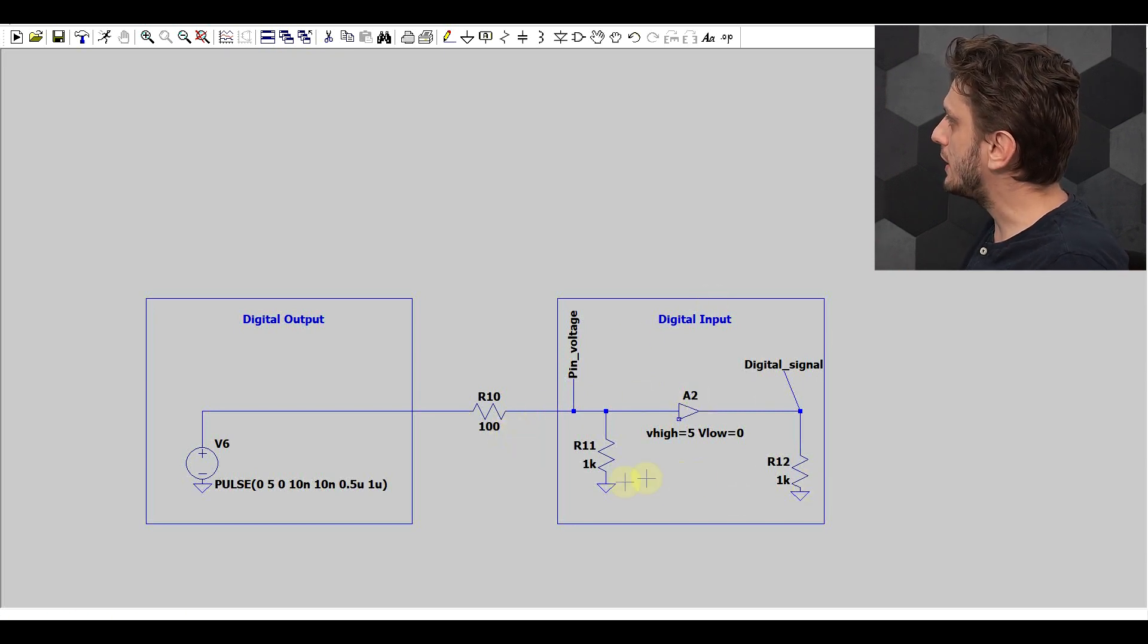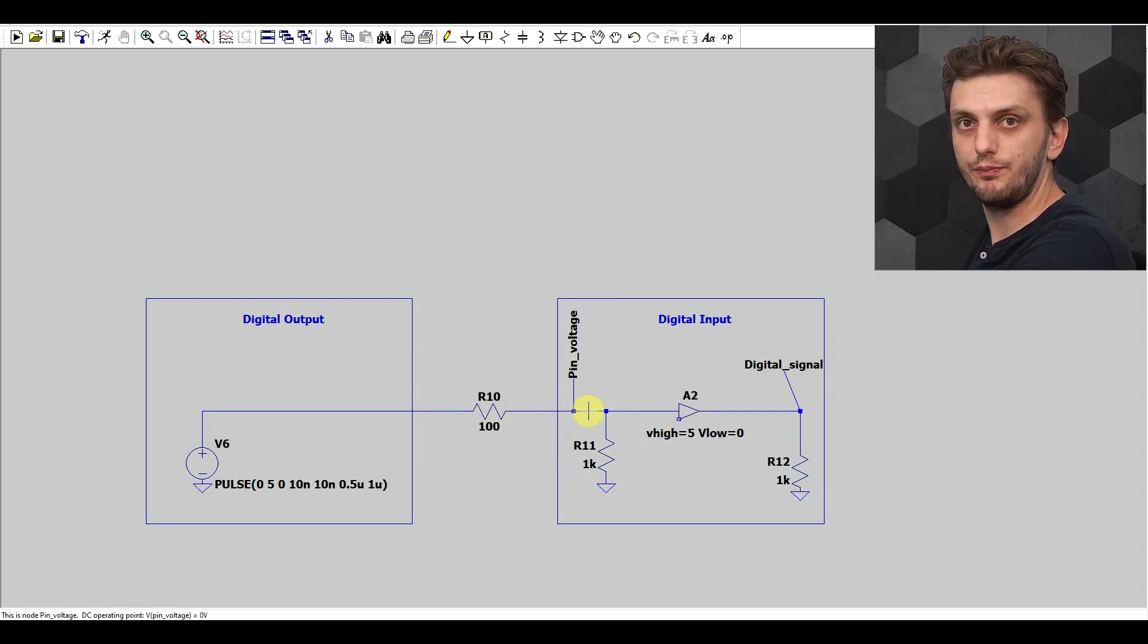And then on the digital input side you have a certain voltage coming into the pin, so this will be the pin voltage that is on the pin of the digital input, and then this is interpreted, and then you have this turned into a digital signal. So this will be interpreted by the logic circuits that come after this input.